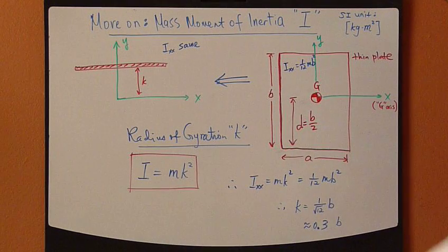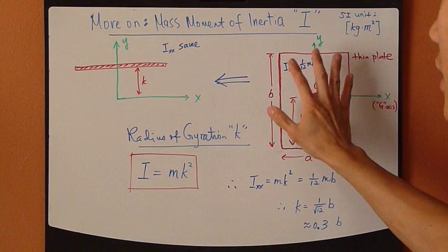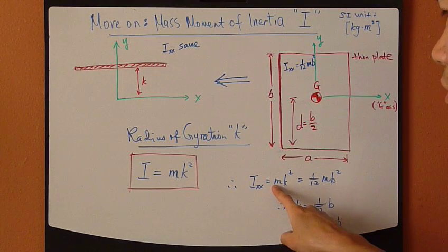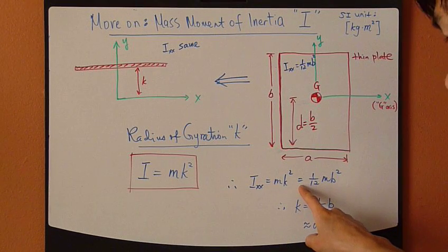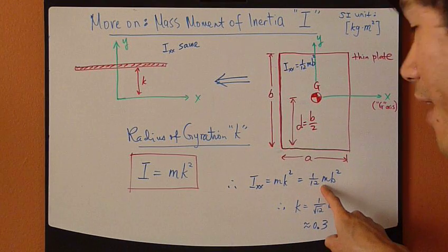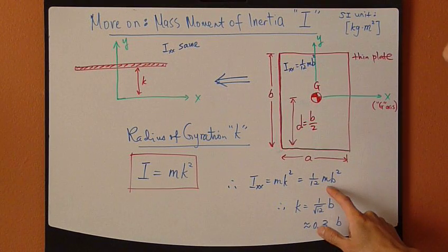So using that, applying this to this thin plate about the x-axis, that gives us Mk squared by definition. It also equals the definition of the moment of inertia about our x-axis for this original shape, which is 1/12 Mb squared.